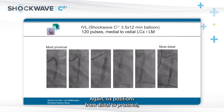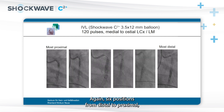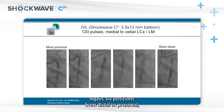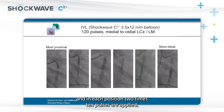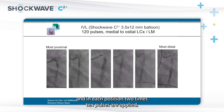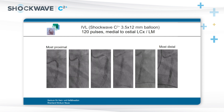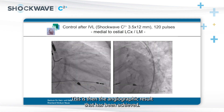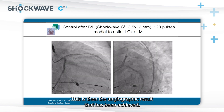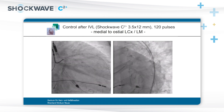Again, six positions from distal to proximal in the circumflex artery. At each position, two times 10 pulses are applied. This is then the angiographic result that has been achieved.